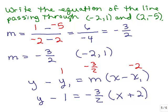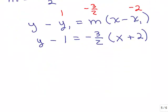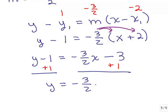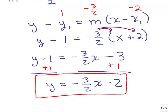Now we can solve for y to put this in slope-intercept form. So y minus 1 equals — we're going to do the distributive property — negative 3 halves x. I have to distribute my negative 3 halves to the 2 as well, so that is going to be minus 3. Then we add 1 to both sides and we get y equals negative 3 halves x minus 2. There's the equation of the line in slope-intercept form.